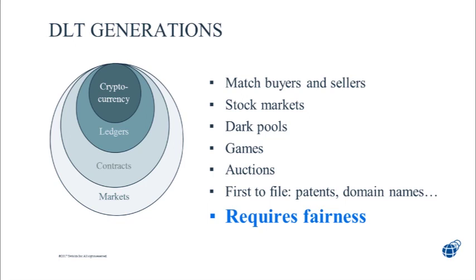Everybody running the ledger could be running these little programs, swapping things atomically and running arbitrarily complex programs. Once we have money, assets, and the ability to do swaps, the next obvious question is: could you have a whole group of sellers and a whole group of buyers? Could you create markets? That would be the fourth generation — something beyond simple two-person transactions.